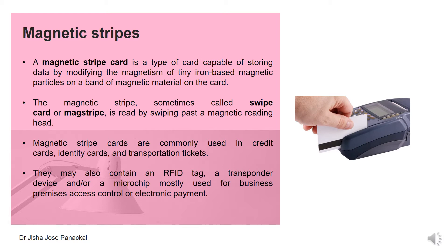The magnetic stripe, also called a swipe card, is read by swiping past a magnetic reading head. These cards are commonly used in credit cards, identity cards, and transportation tickets. They may also contain an RFID tag, a transponder device, or a chip or microchip, mostly used for business premises, access control, or electronic payment.